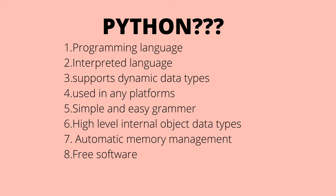Compiled languages run faster because compilation is done before execution. On the other hand, interpreted programs run slower because compilation and execution take place simultaneously. However, in the case of Python, even though it is an interpreted language, it is very fast.